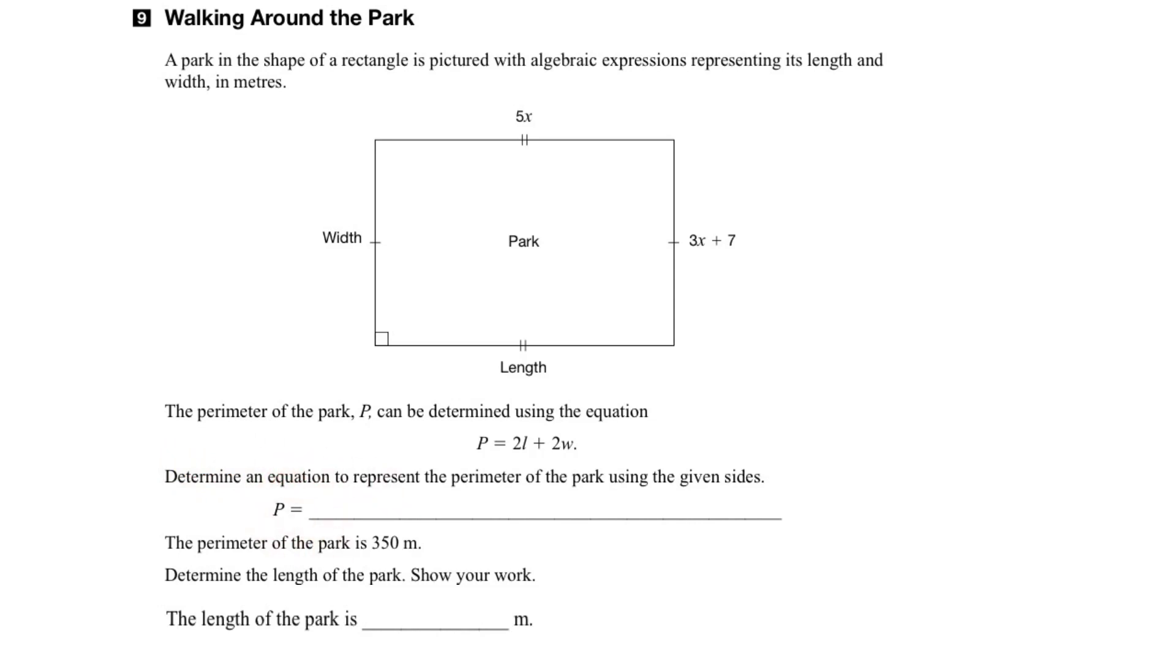So let's start by putting down the formula for the perimeter of the rectangle, or the park. Perimeter is equal to twice the length plus twice the width. Now we know that the length is going to be 5x, and the width is going to be 3x plus 7.